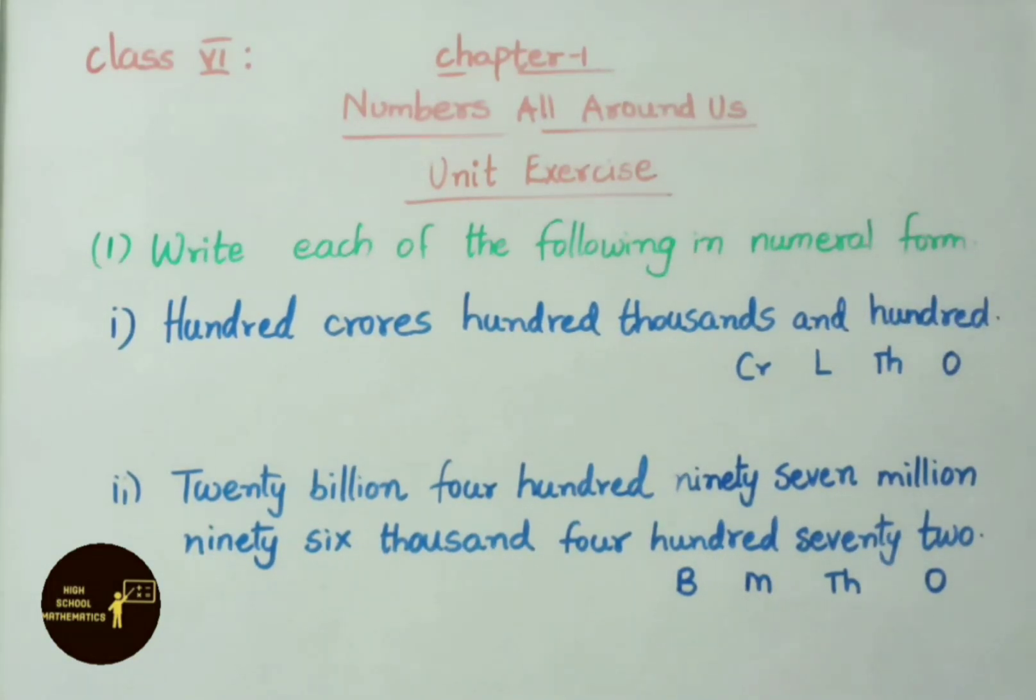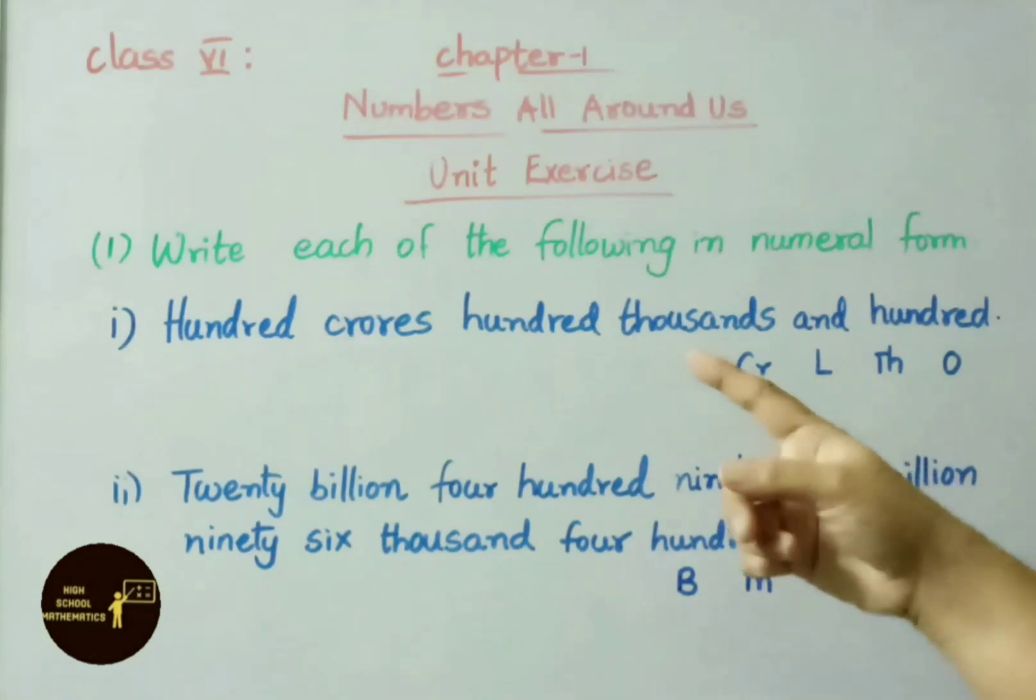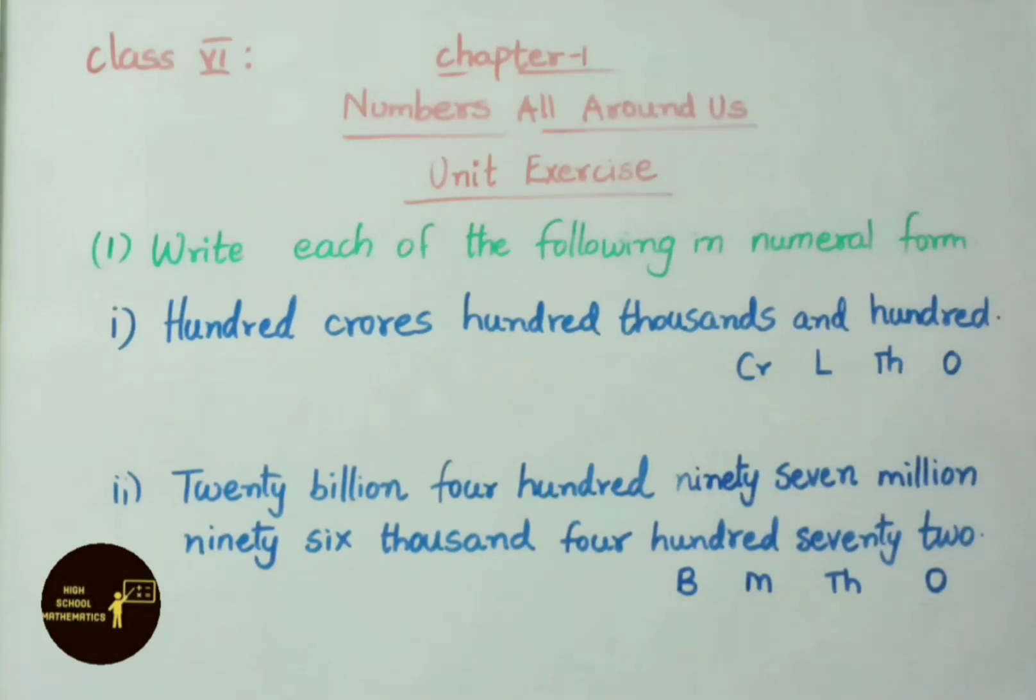See the first one: write each of the following in numeral form. First one is 100 crores, 100 thousands and 100. To write this in numeral form, first we have to mention periods: ones period, thousands, lakhs and crores.